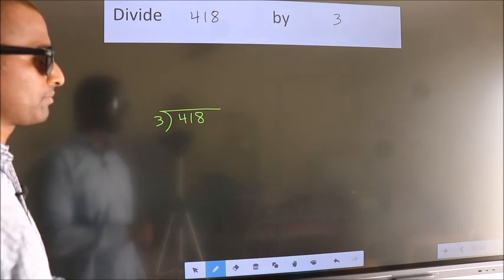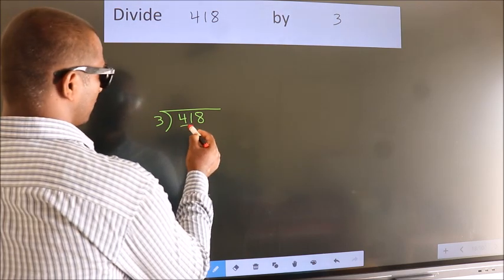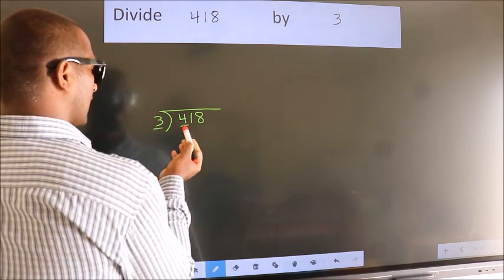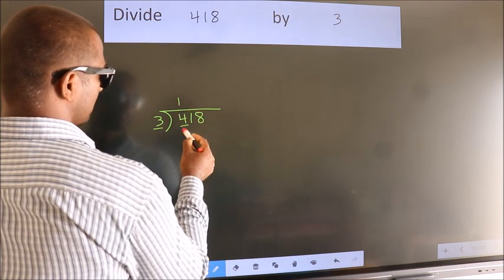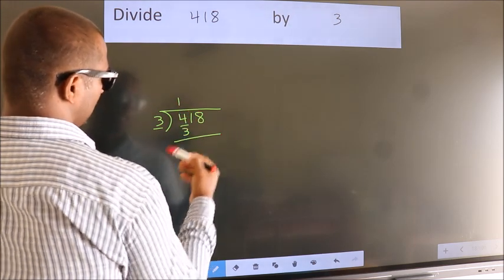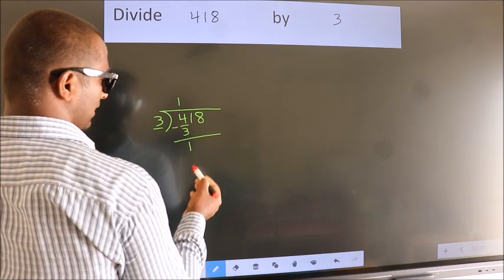Next, here we have 4, here 3. A number close to 4 in the 3 table is 3 once, which is 3. Now we should subtract. We get 1.